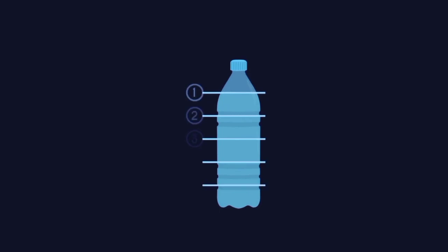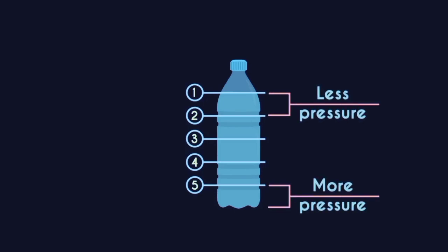Let's divide the fluid into five equal parts. You can see the second layer of the water is holding the weight of the first layer. Similarly, the third layer is holding the weight of the first as well as second layer, and the fourth layer is holding the weight of top three layers, and so on. So clearly the pressure at the bottom-most layer is maximum.